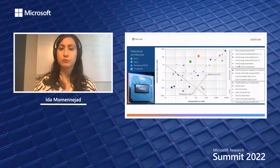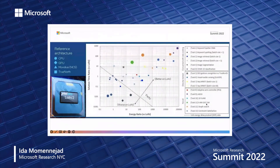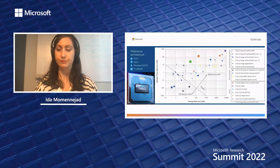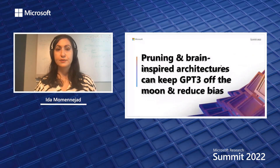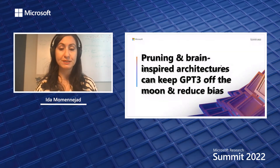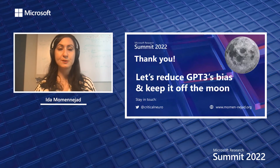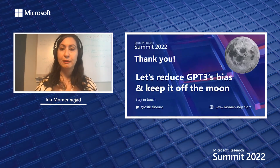Intel recently released benchmarks showing that for specific tasks, neuromorphic chips could outperform CPU-GPU systems. Sometimes making hardware specific to a task could massively reduce the footprint of AI that solves those tasks. In short, I'm suggesting that pruning and cognitive science and brain-inspired architectures can perhaps keep GPT-3 off the moon and reduce its bias. Let's together think about ways to reduce AI's bias and environmental impact. Thank you.